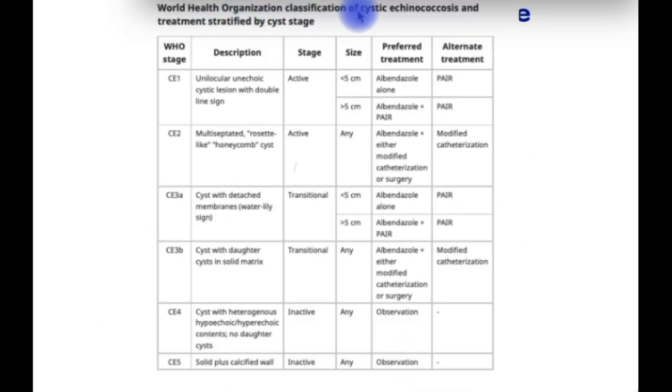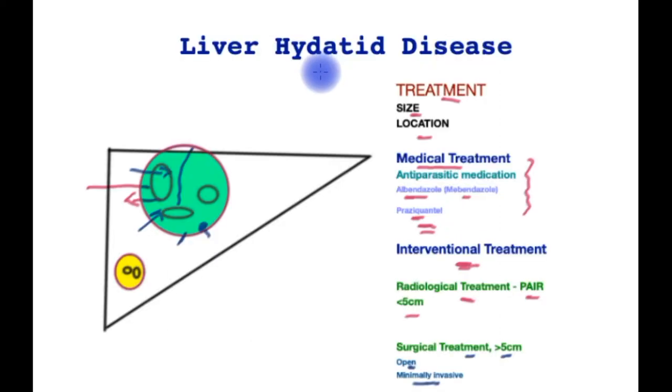The World Health Organization has produced an extremely useful classification of treatment of liver hydatid cysts. It stages them from CE1 to CE5 depending upon the appearance on ultrasound scans, whether or not the disease is active, the size of the cyst, and then it offers a preferred treatment for these various stages as well as the alternate treatment. This should serve as a useful basis for clinicians treating such patients. This culminates a brief overview of the liver hydatid cysts.